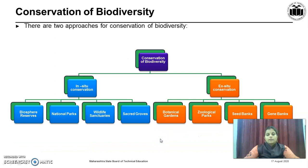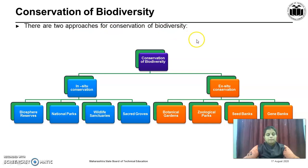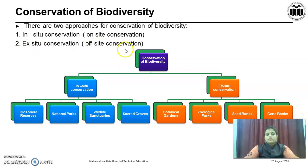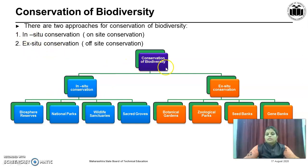Now, it is the need for conservation of biodiversity. There are two approaches for conservation of biodiversity: the first is in-situ conservation, which is also known as on-site conservation, and the second is ex-situ conservation, which means off-site conservation.